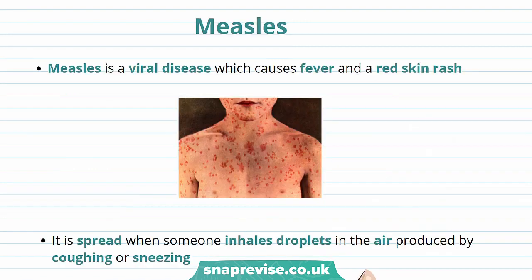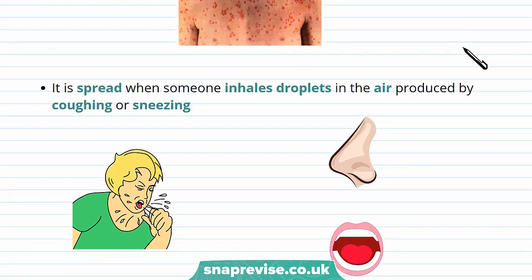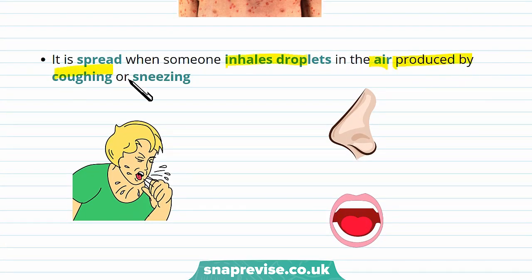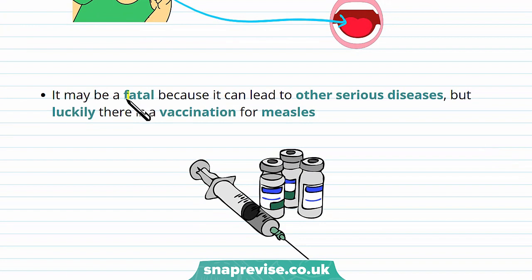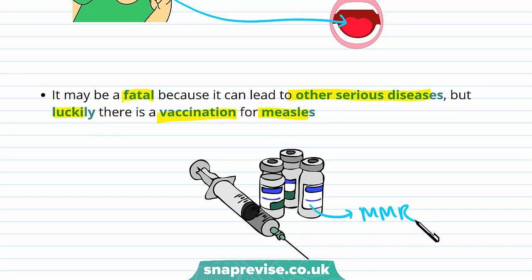Measles is an example of a highly infectious viral illness. Anyone can get measles, but it's most common in younger children. Someone with measles usually has a fever and a red skin rash. It spreads when someone inhales droplets in the air produced by coughing and sneezing — similar to how tuberculosis is spread, but that is a bacterial infection. These infected droplets go into the nose and mouth of uninfected people, causing them to be infected. Measles may lead to serious complications and can be fatal, as it can lead to other diseases. Luckily there's a vaccination for measles — normally babies are vaccinated with the MMR vaccine, which prevents against three diseases: measles, mumps, and rubella. The widespread use of the vaccine is why measles is now uncommon in the UK.